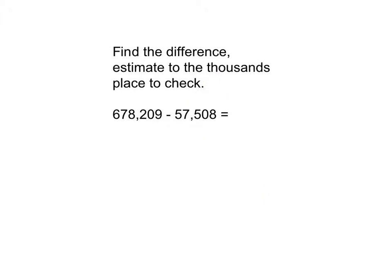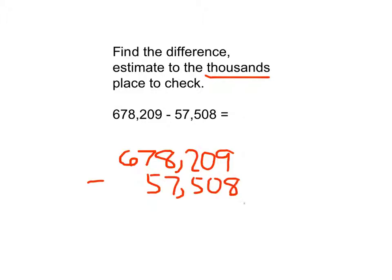Here's another example. Again it says find the difference. Estimate to the thousands place to check. And then so I will find my exact answer first. Rewrite those carefully so that they are up and down vertically. And then work through that problem. 9 minus 8 is 1. 0 minus 0 is 0. 2 minus 5. I cannot do that. So the 8 becomes a 7. So the 2 can become a 12. 12 minus 5 is 7. 7 minus 7 is 0. 7 minus 5 is 2. And 6 minus 0 is 6.